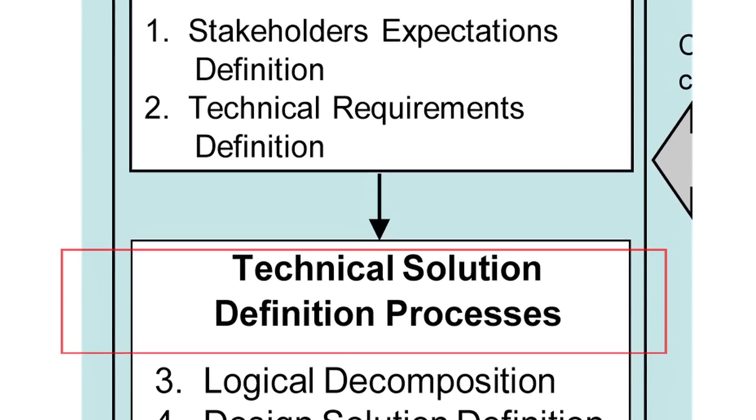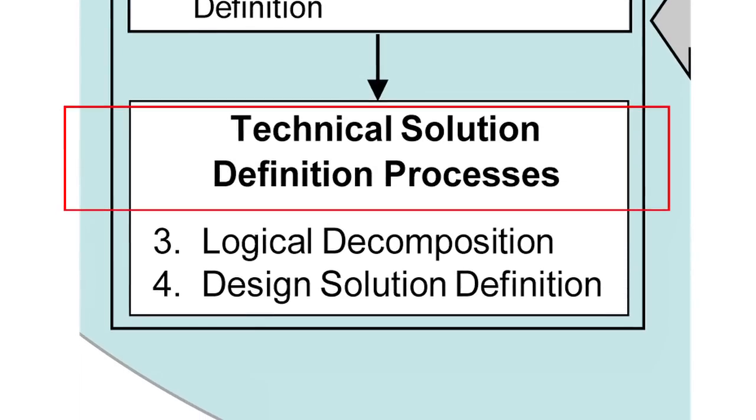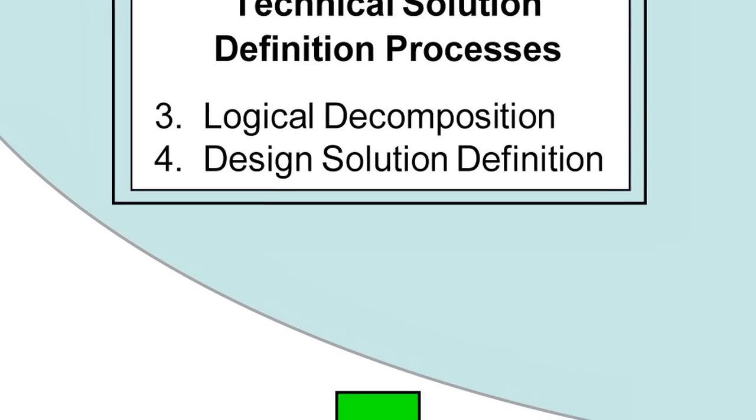After defining requirements, steps 3 and 4 look at defining a technical solution. Having requirements alone won't give you a spacecraft — you need to do drawings and concept analysis. You figure out that you need a battery for power, thrusters to keep the satellite in orbit, and start laying out systems, subsystems, and components in a hierarchy so you understand at the lowest level what everything needs to do to make the system come to fruition.